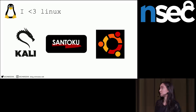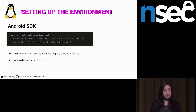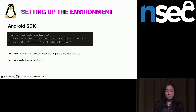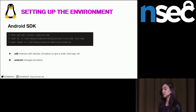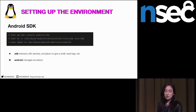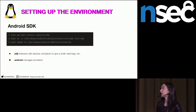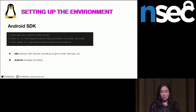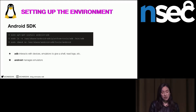ADB is what interacts with your devices — whether an emulator or a connected device. It gives you shell, lets you read logs, and do a bunch of useful things. If you're running a 64-bit system, you'll need to still install 32-bit headers and 32-bit packages, so keep that in mind if you run into issues during setup.